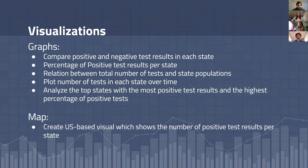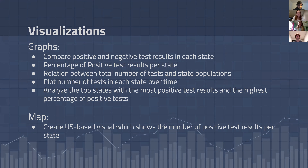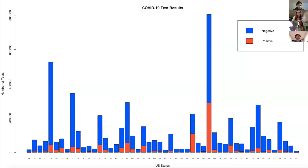For our project, we decided on a variety of visualizations. We have a series of graphs and then an interactive map to represent our data. The first graph here is a stacked bar graph, which represents the ratio of positive and negative tests in each state. As we can see here, New York and California are standouts for the highest number of tests.